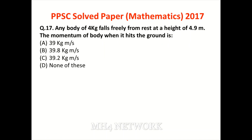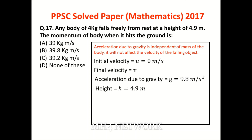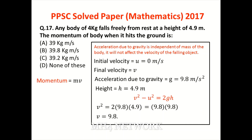A body falls freely from rest from a height of 4.9m — find the momentum when it hits the ground. Momentum = mass × velocity. Acceleration due to gravity is independent of mass — g = 9.8 m/s². Initial velocity u = 0, height = 4.9m. Using v² = u² + 2gh, substituting values: v² = 2 × 9.8 × 4.9 = 96.04, so v = 9.8 m/s. Mass = 4 kg — momentum = 4 × 9.8 = 39.2 kg·m/s. Option C is the correct answer.